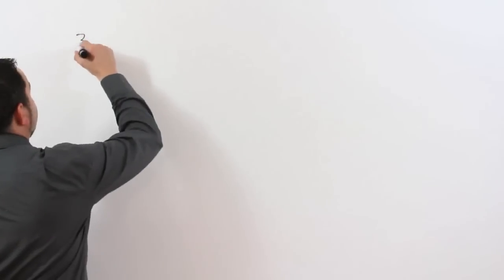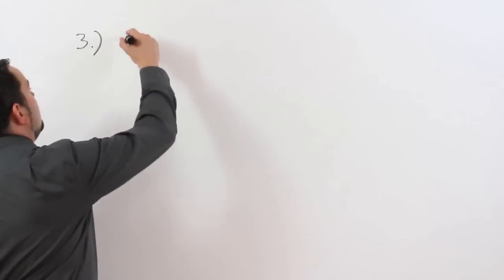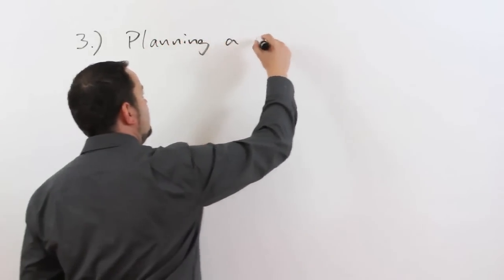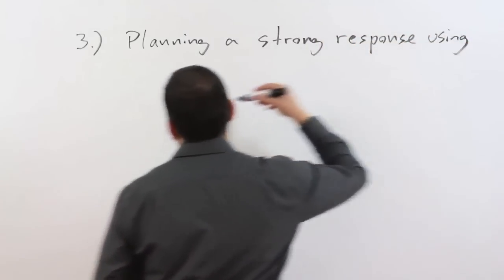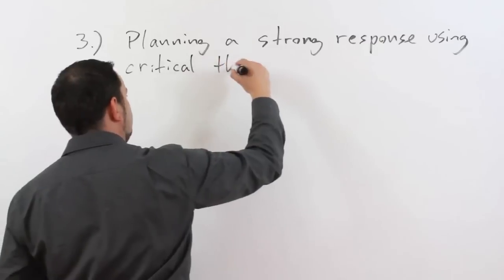Step three of this process for Task 2 is to get a clear idea of what you will write about. One of the most important ways to get a high score is to have a complete idea of what you are going to write rather than writing piece by piece, because writing piece by piece usually leads to incoherent and loosely connected ideas that often go off topic. So step three is planning a strong response using critical thinking.